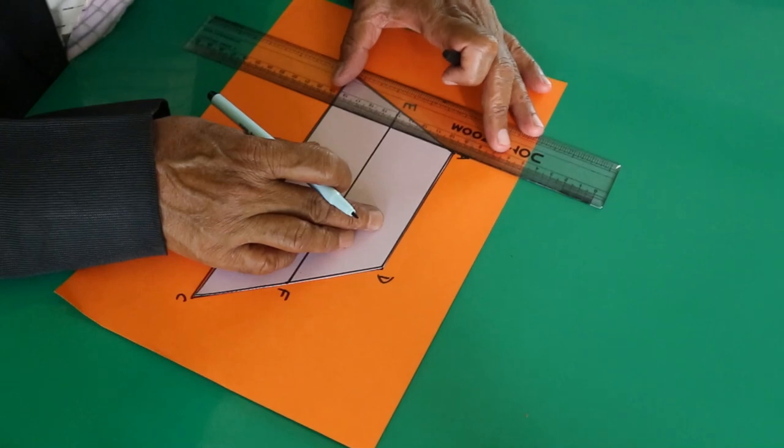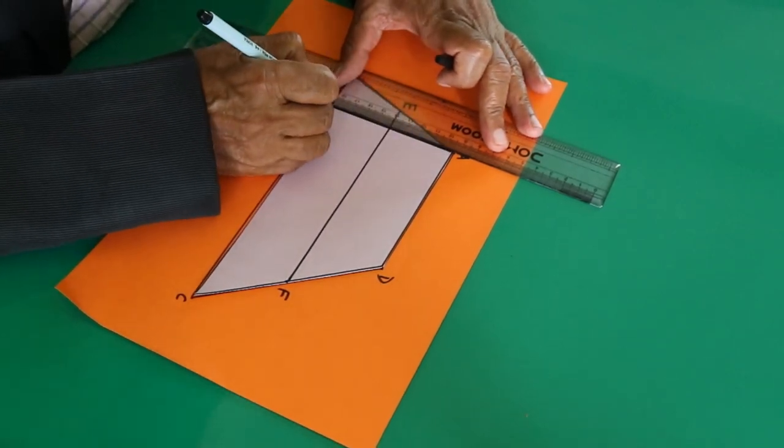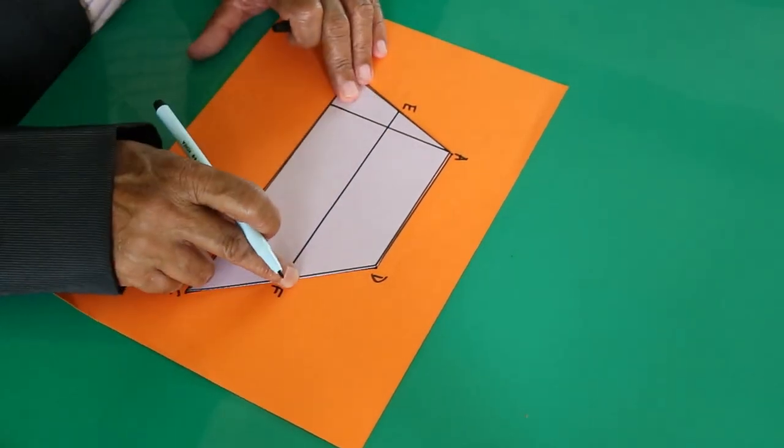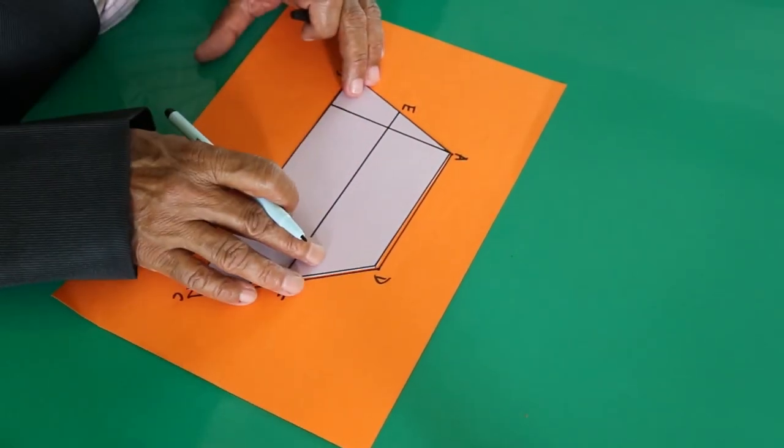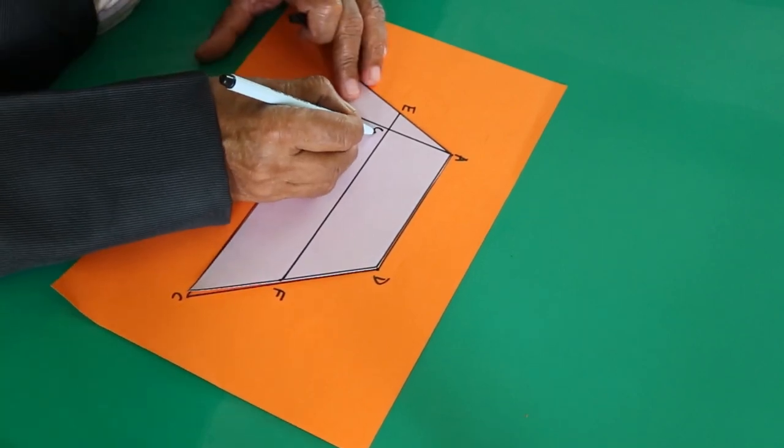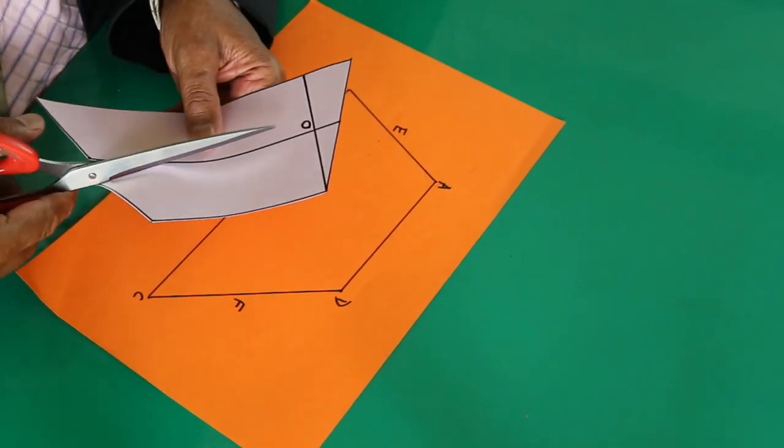This height is also bisected at this point. Let this point be O. Cut out these two pieces.